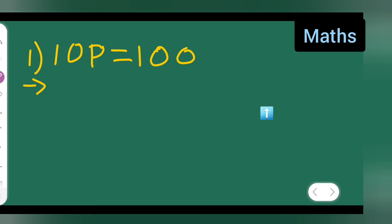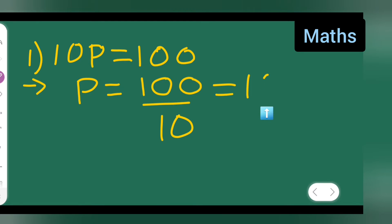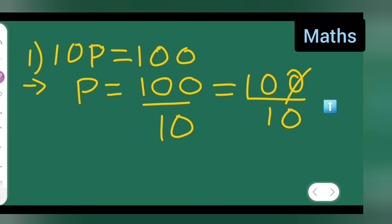What I have to do is write down p is equal to 100 upon 10. So basically, this is 100 upon 10. What I have to do is the zeros will get cancelled. So what I'm left with is 10. Therefore, p is equal to 10.